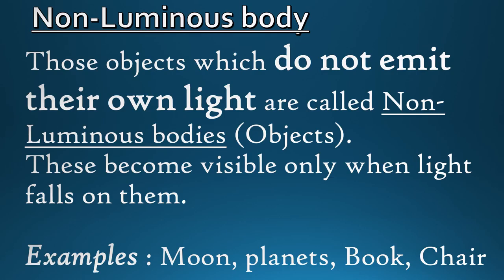Non-luminous bodies: those objects which do not emit their own light. These become visible only when light falls on them. A few examples are: moon, planets, book, and chair.